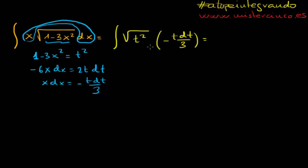Okay, so let's put the 3 out of the integral, and the minus as well. The t squared comes out of the square root as well, so we'll have t times t dt, and that equals to minus 1 over 3, integral of t squared.